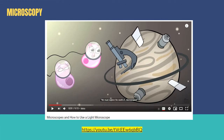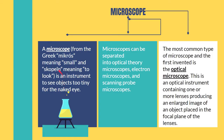The word microscope was taken from the Greek word 'micros,' meaning small, and 'skopein,' meaning to look — so to look at small things or small organisms. We use microscopes to see objects that are too tiny for the naked eye.